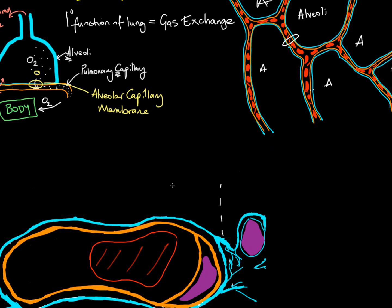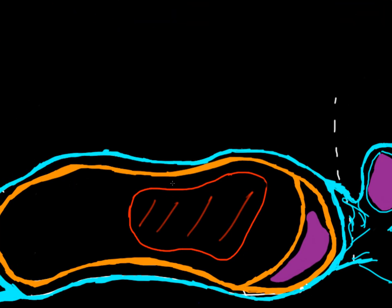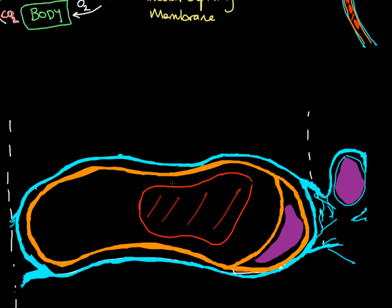Let's zoom in a little further. We'll see now we have one red blood cell and we have our wall here. The blue is the alveolar wall, the orange is the capillary, and the red here is the red blood cell. So we've zoomed in again and will start to identify some of these structures. The blue is the alveolar wall, orange is the capillary, red is the red blood cell.